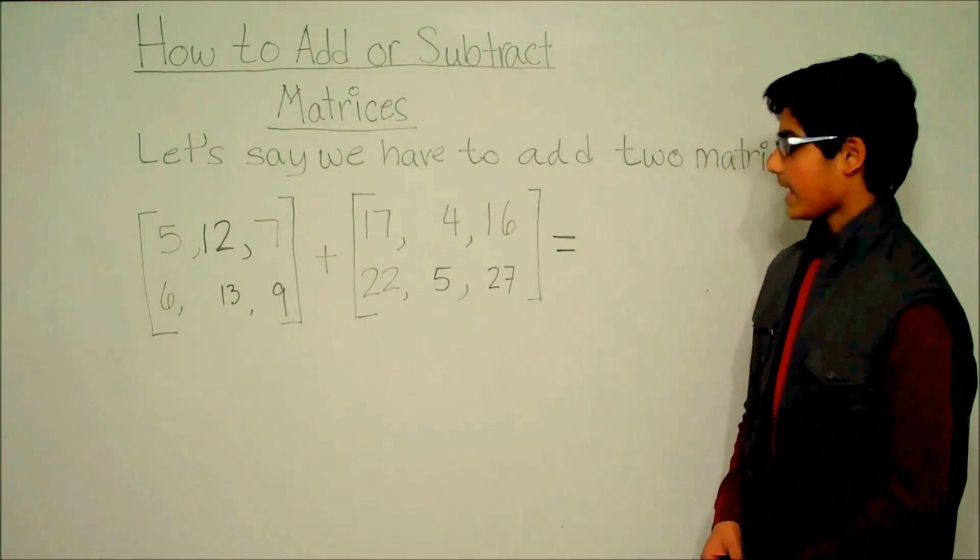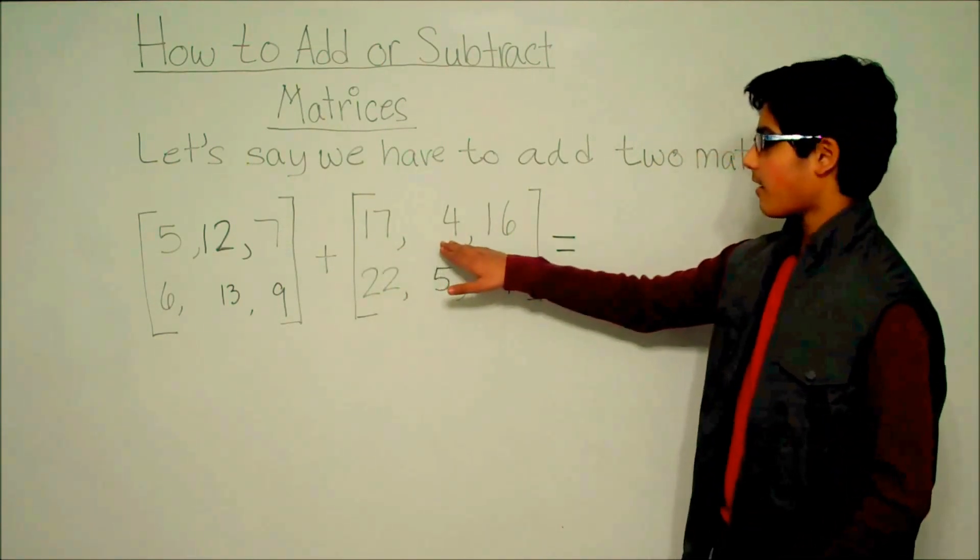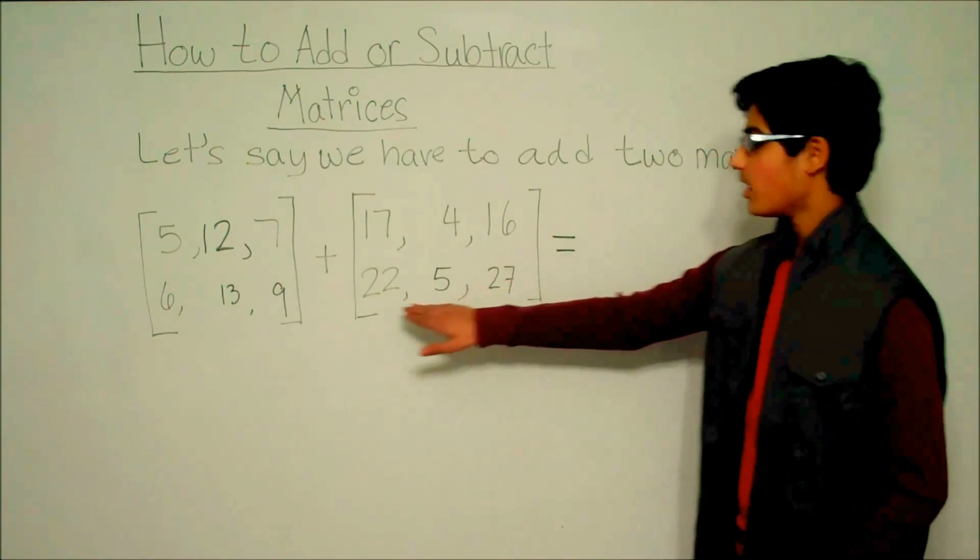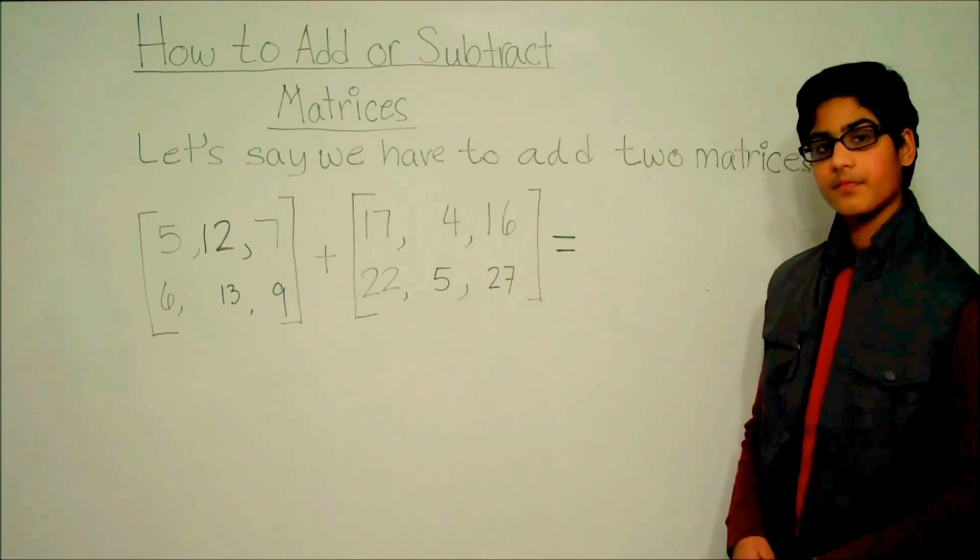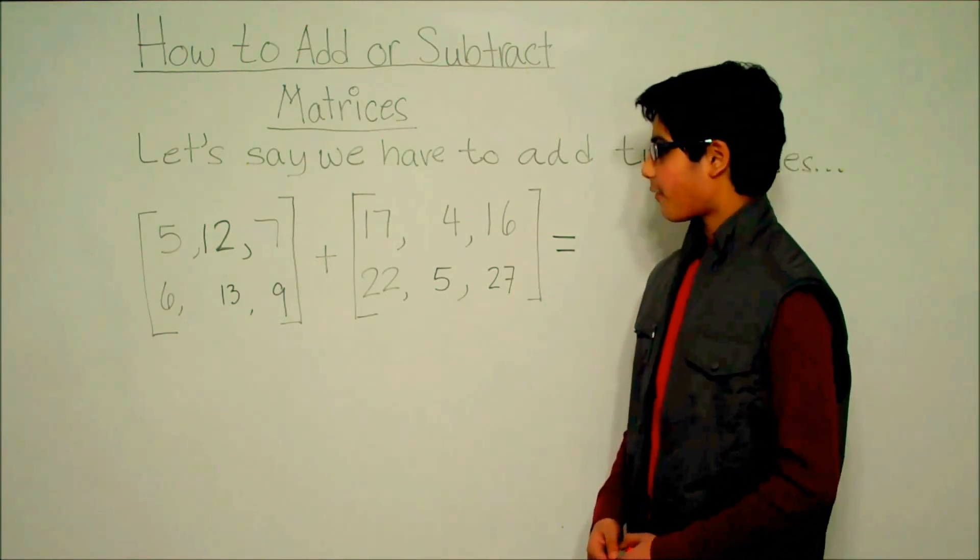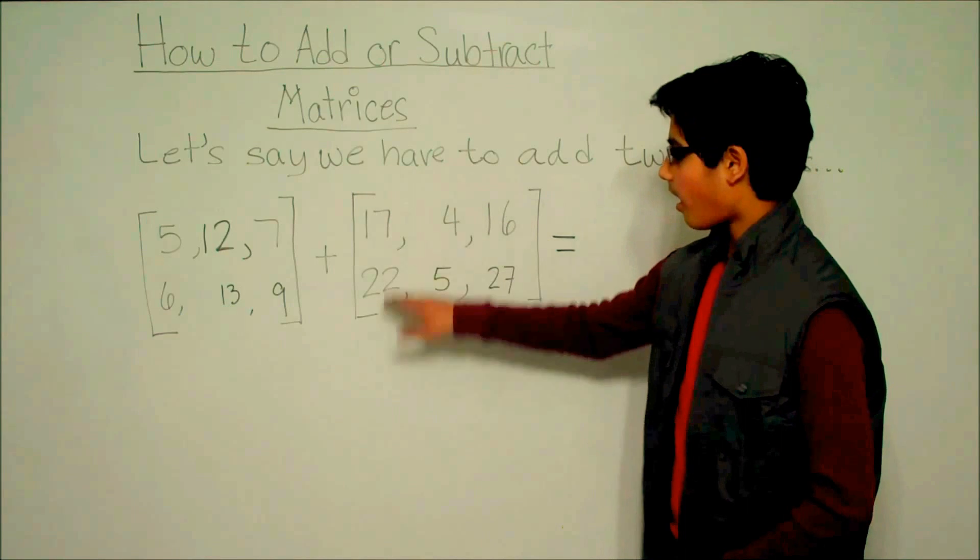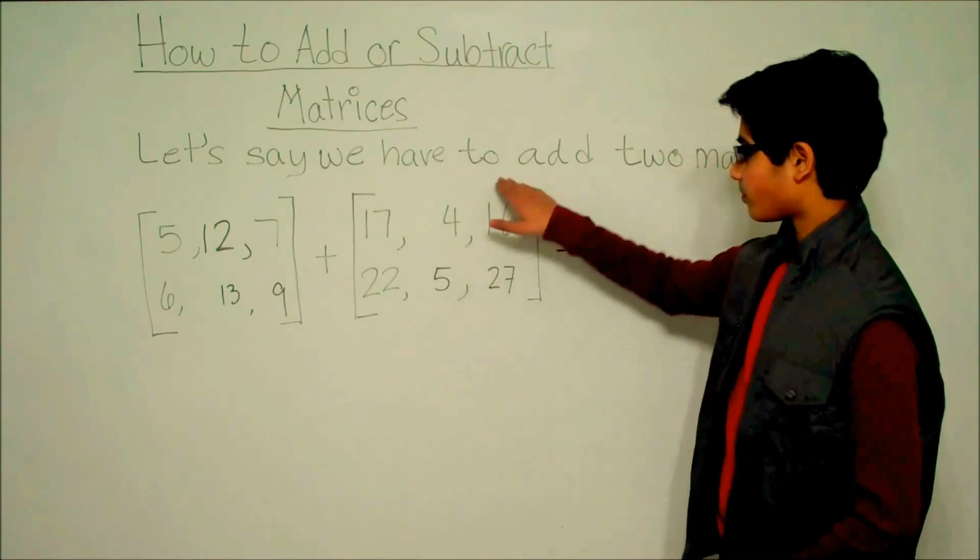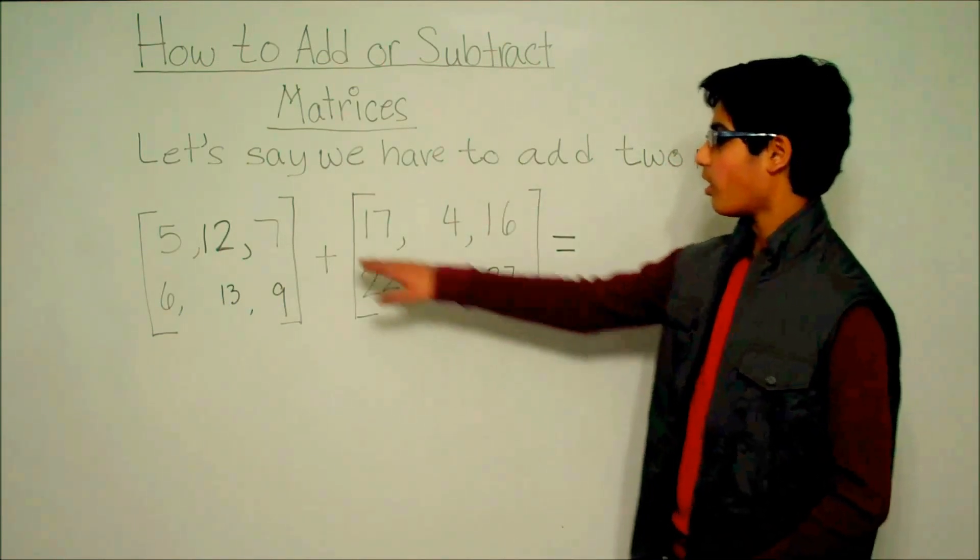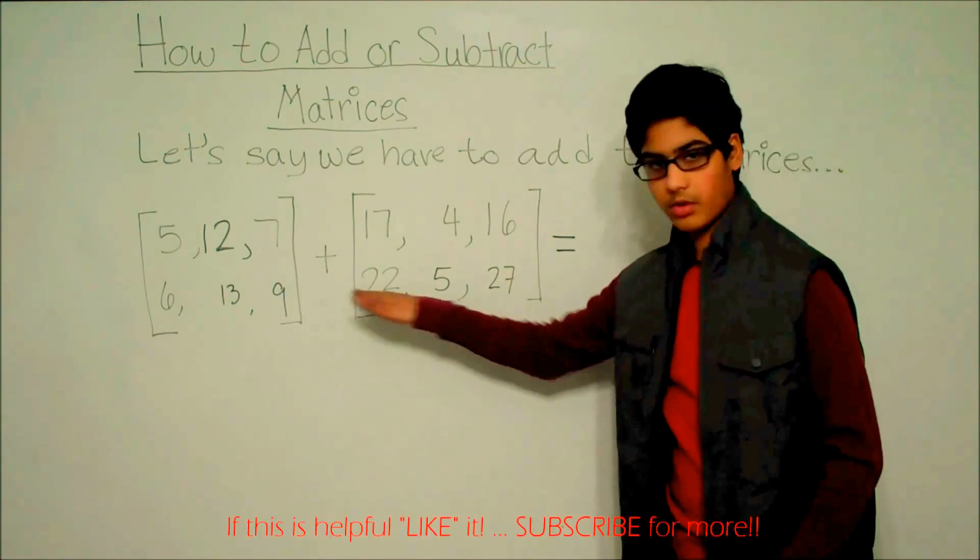The second matrix is 17, 4, 16, 22, 5, 27, and it's in the format of three columns and two rows. This is row 1 and row 2.